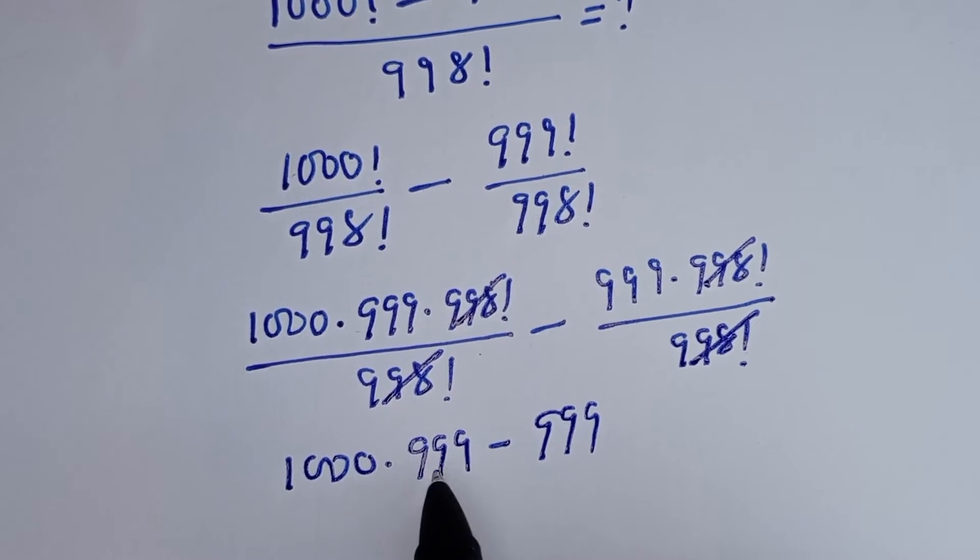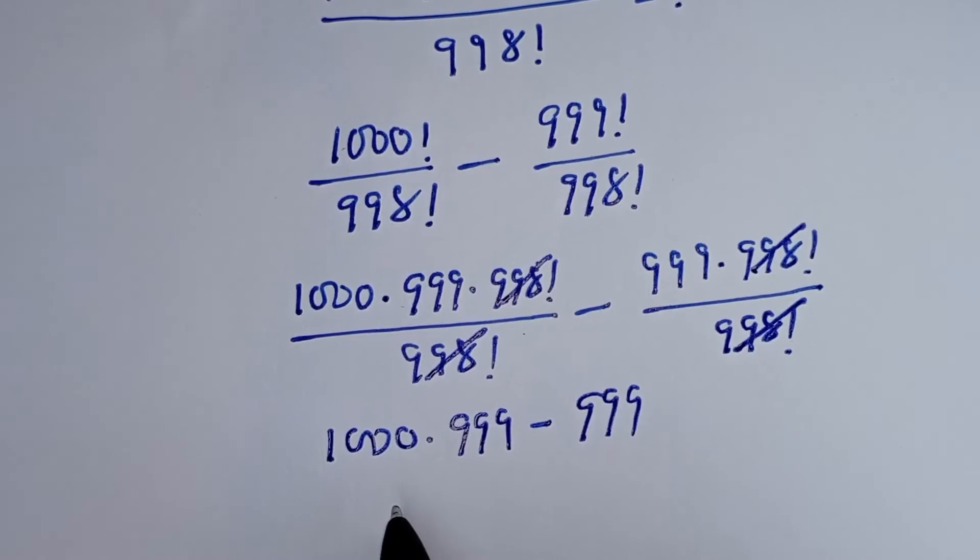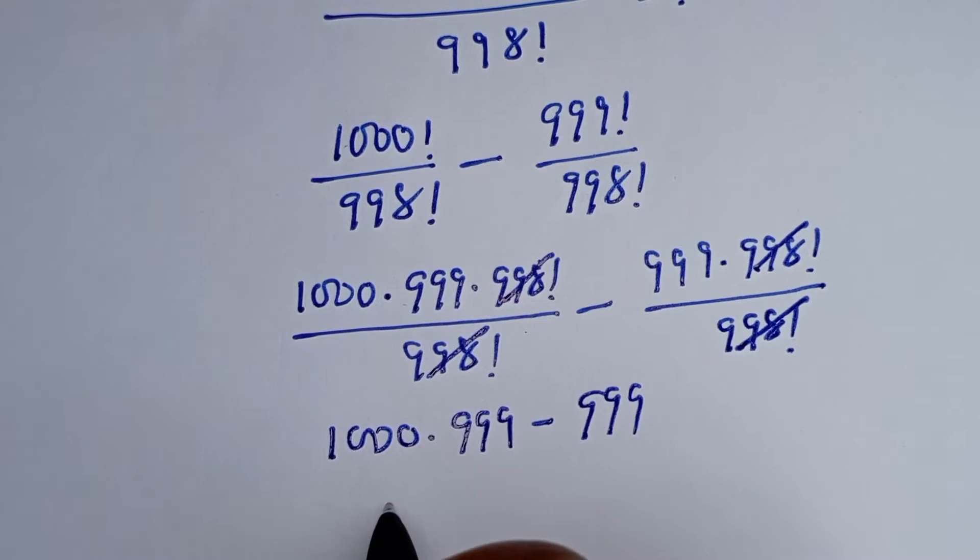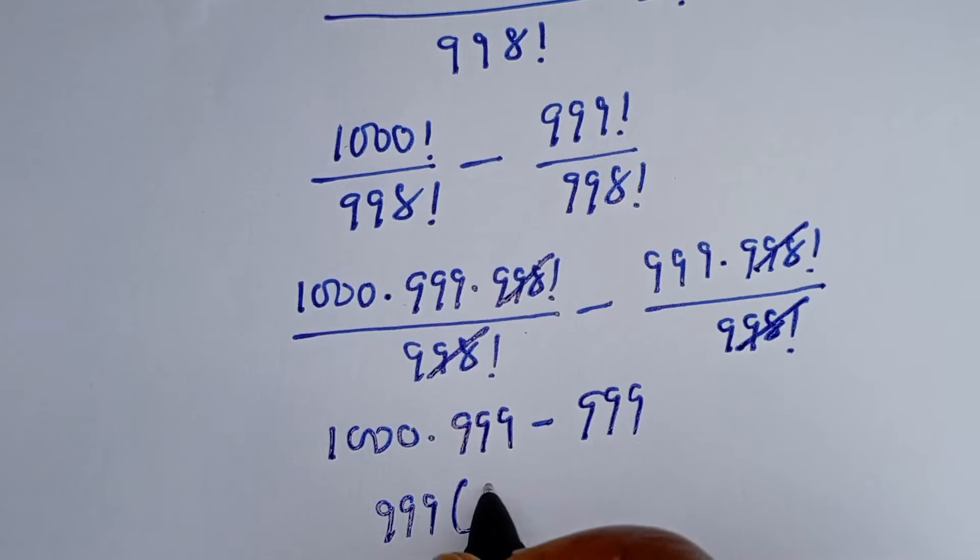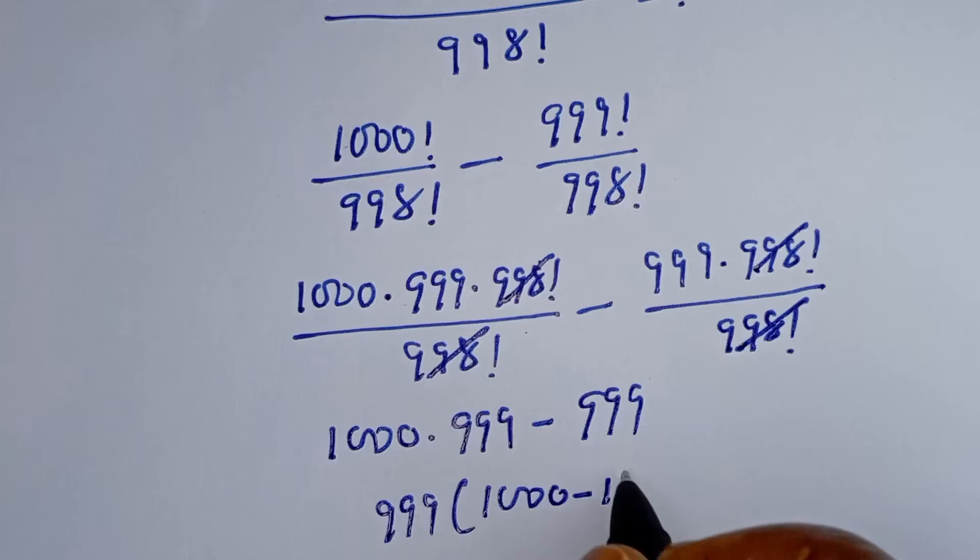If you look at this, 999 is common. Let's bring it out. We have 999 bracket. If you divide this by this, we have 1000 minus, if you divide this by this, 1.